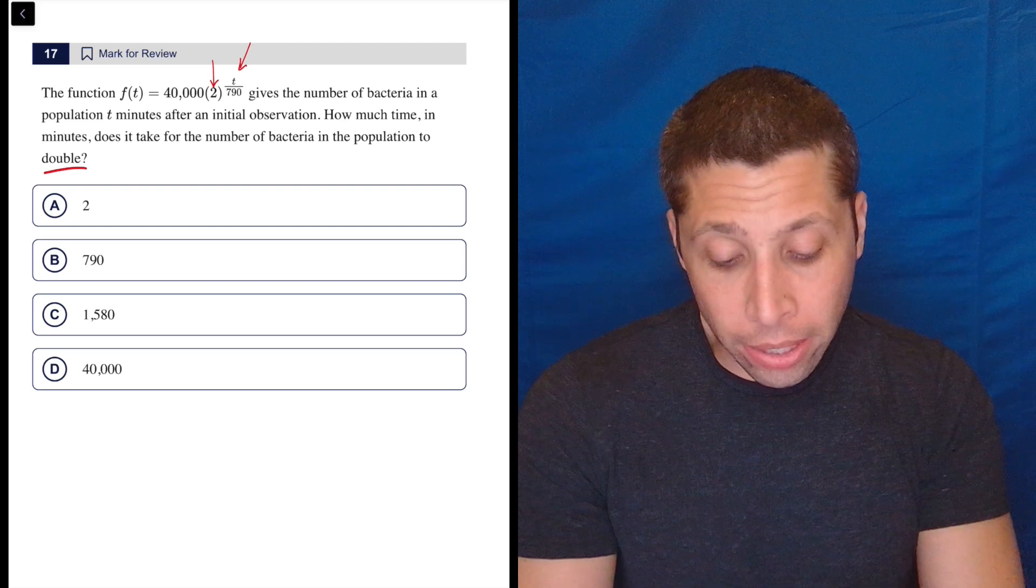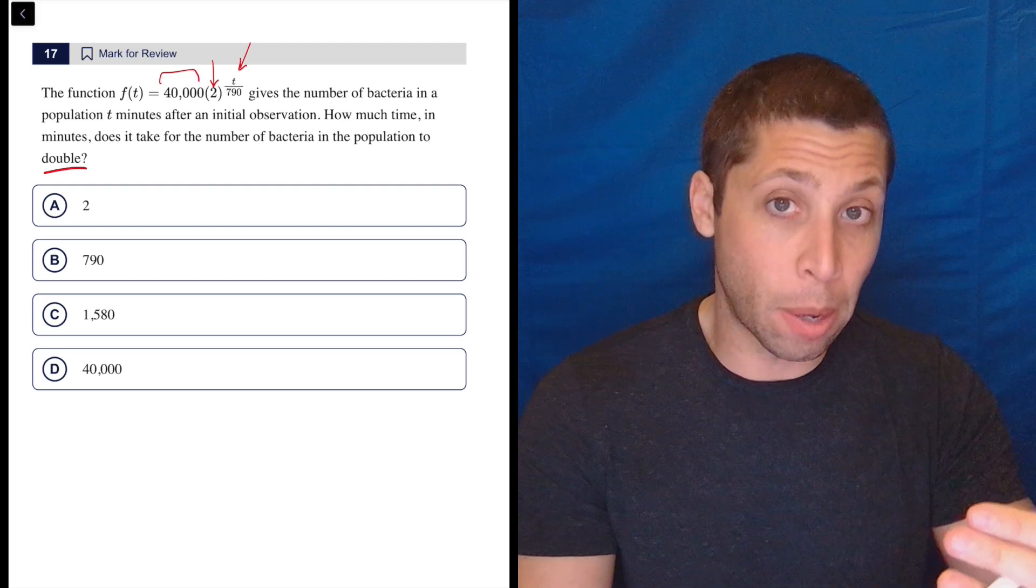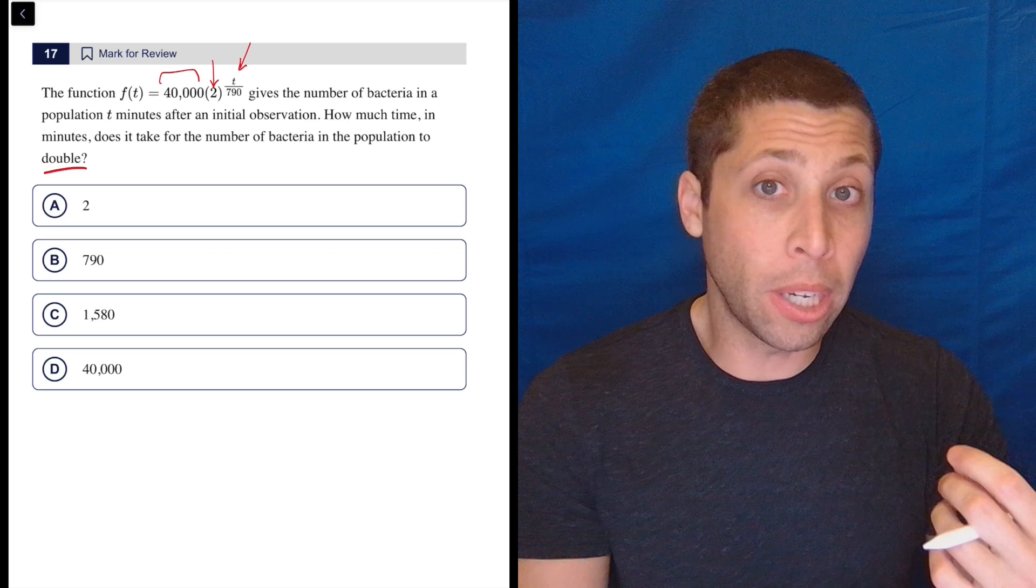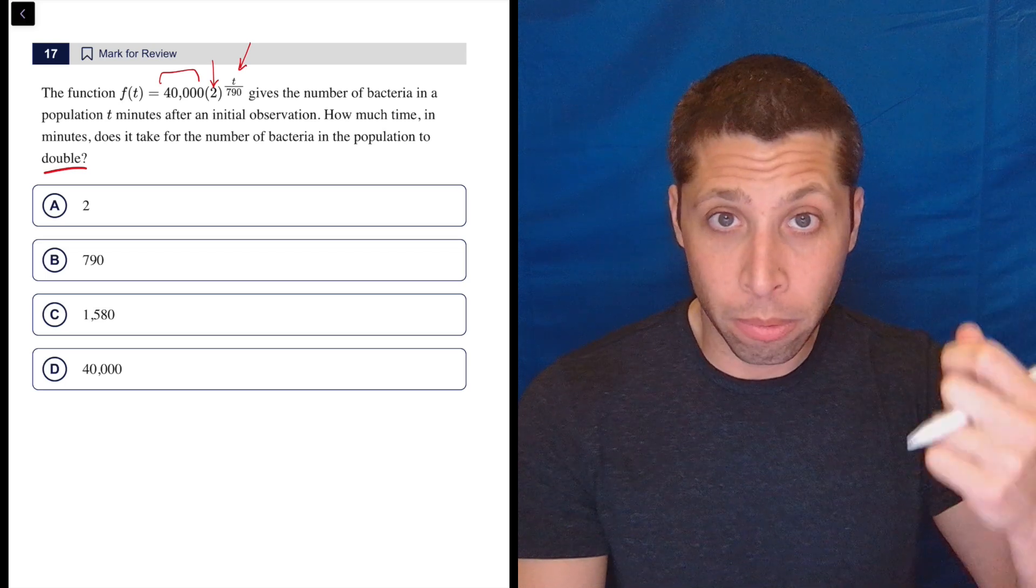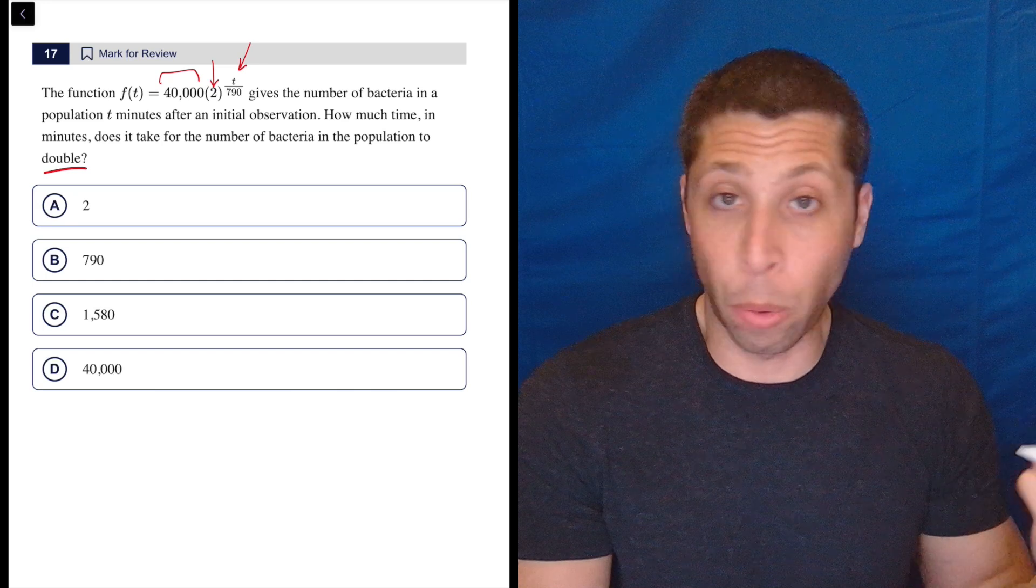So you also might recognize that the 40,000 is the starting number of bacteria because if t were equal to 0, then the exponent would be 0 and 2^0 is 1. So we would just have the 40,000. That's it.